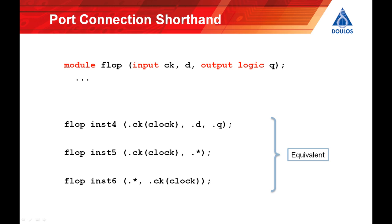If you do decide to use dot star then it's possible to include exceptions where some of the ports get connected to different names. You do that by simply including explicit connections in the list alongside dot star. It doesn't matter whether the explicit connections go at the start or at the end of the list. So in this example the port ck is connected to the variable or wire clock while d is connected to d and q to q.